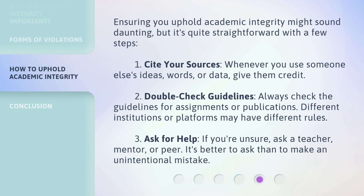Ensuring you uphold academic integrity might sound daunting, but it's quite straightforward with a few steps. 1. Cite your sources: Whenever you use someone else's ideas, words, or data, give them credit. 2. Double-check guidelines: Always check the guidelines for assignments or publications. Different institutions or platforms may have different rules. 3. Ask for help: If you're unsure, ask a teacher, mentor, or peer. It's better to ask than to make an unintentional mistake.